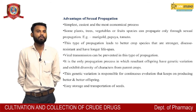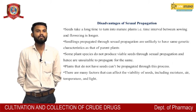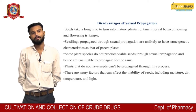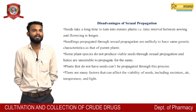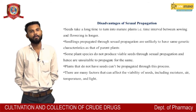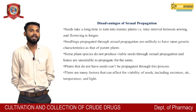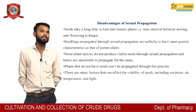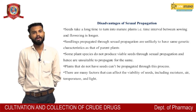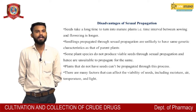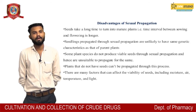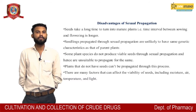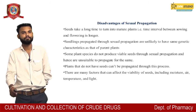Easy storage and transport of seeds is another advantage. Disadvantages of sexual propagation: seeds take a long time to turn into mature plants. The time interval between sowing and flowering is longer. Seedlings propagated through sexual propagation are unlikely to have the same genetic characters as parent plants. Some plant species do not produce viable seeds through sexual propagation and hence are unsuitable to propagate. Plants without seeds cannot be propagated through this process. Many factors can affect the viability of seeds including moisture, air, temperature, and light.